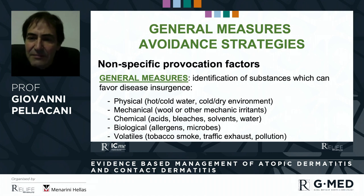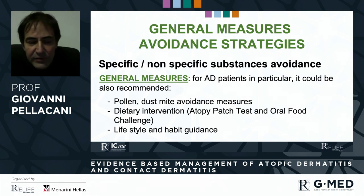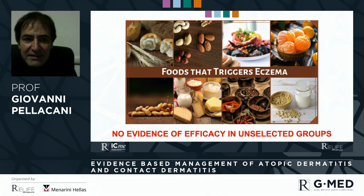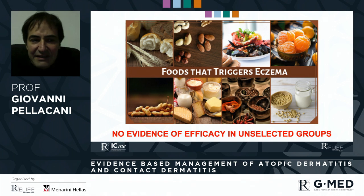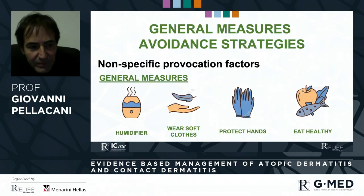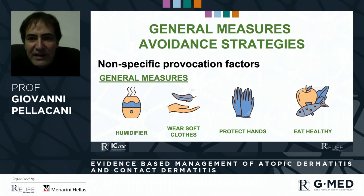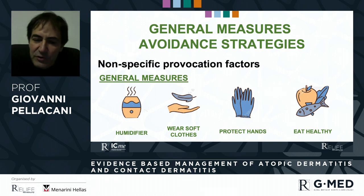This general strategy may help reduce the impact of other substances and skin reactions in these patients. For atopic dermatitis, some factors are more important, like pollen, dietary intervention, and lifestyle. These can improve atopic dermatitis, but keep in mind there is no evidence that diet is effective in unselected patients — only when it is demonstrated that a substance is causing the disease. General measures include using a humidifier, wearing soft clothes, protecting the hands, and maintaining a healthy lifestyle with healthy food.